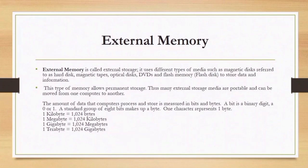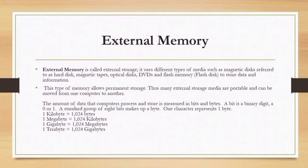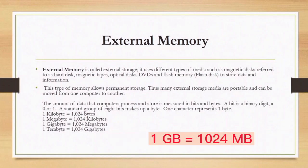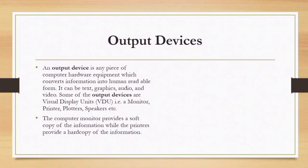The amount of data that a computer processes and stores is measured in bits and bytes. A bit is a binary digit — either a zero or a one. A standard group of eight bits makes up a byte. One character represents one byte. One kilobyte is equivalent to 1024 bytes. One megabyte (MB) is equivalent to 1024 kilobytes. One gigabyte is equivalent to 1024 megabytes. One terabyte (TB) is equivalent to 1024 gigabytes.